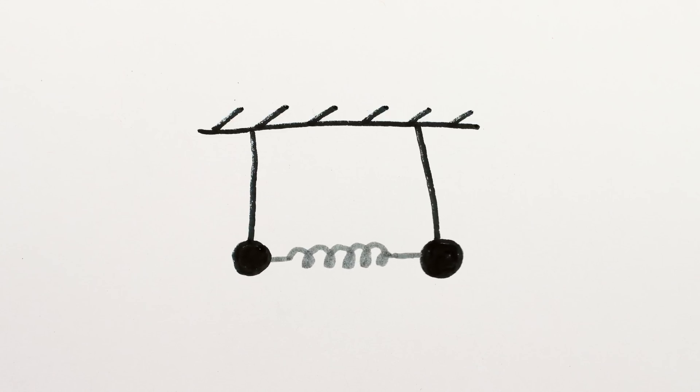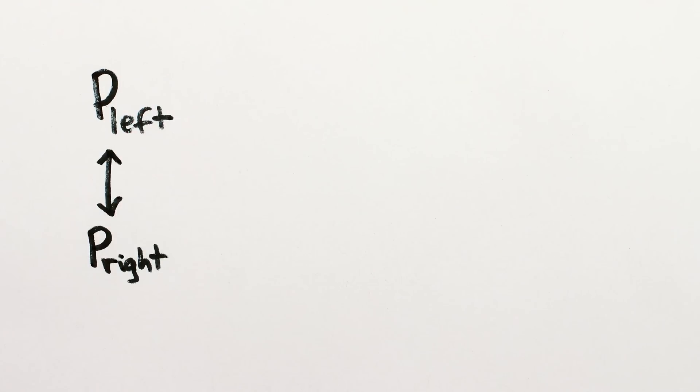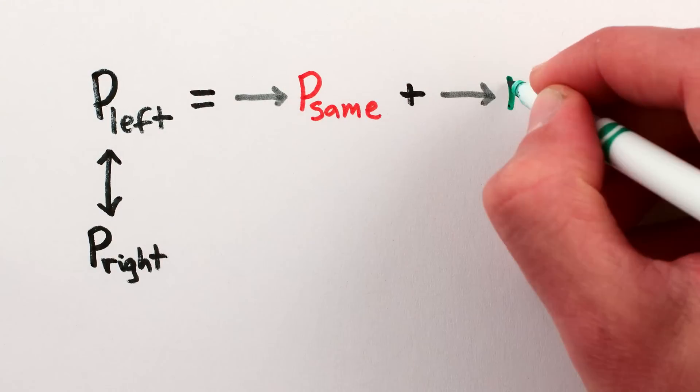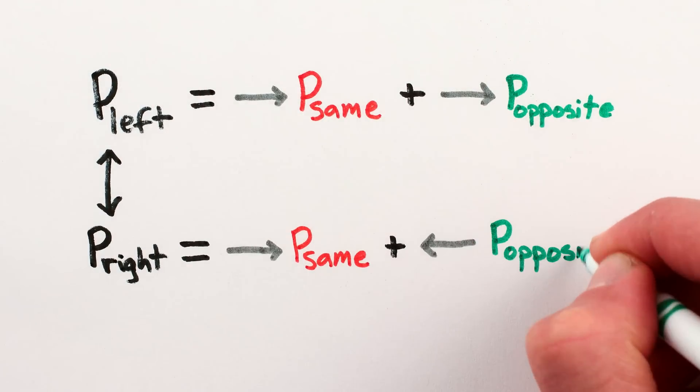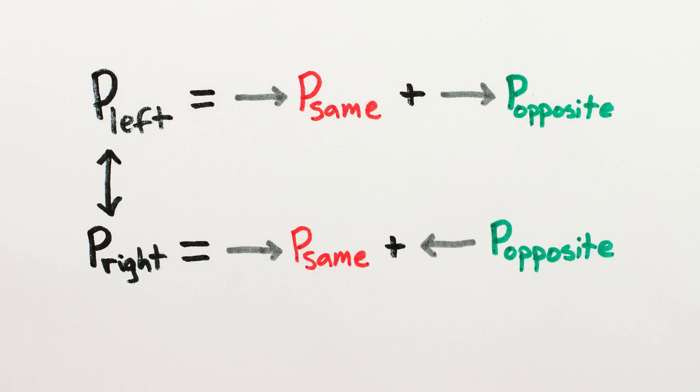So the states you interact with, either the left or right pendulum swinging, can oscillate back and forth between each other, swapping identities, because they're superpositions of the non-interacting states, and those states have different frequencies. Other than a few pesky details to do with quantum mechanics, this is essentially what happens with neutrinos.